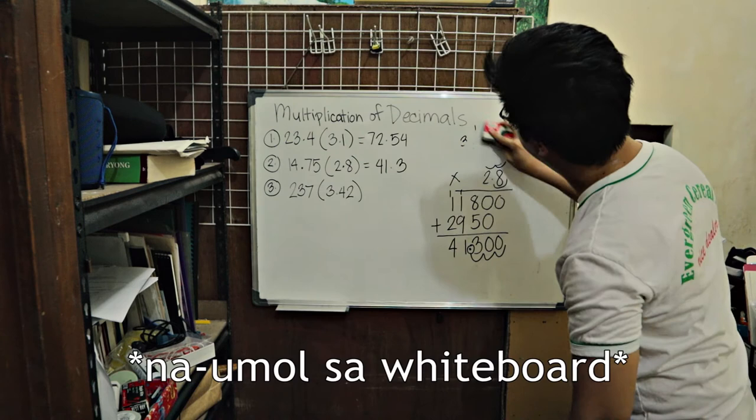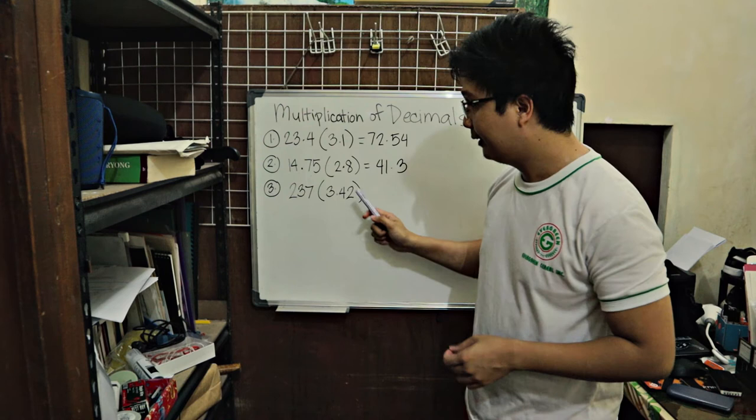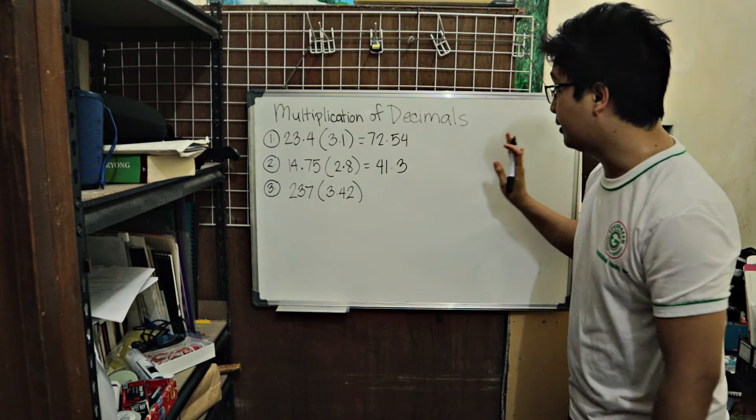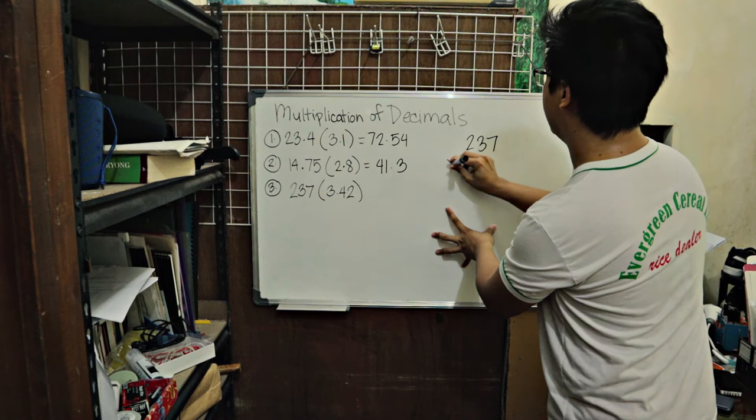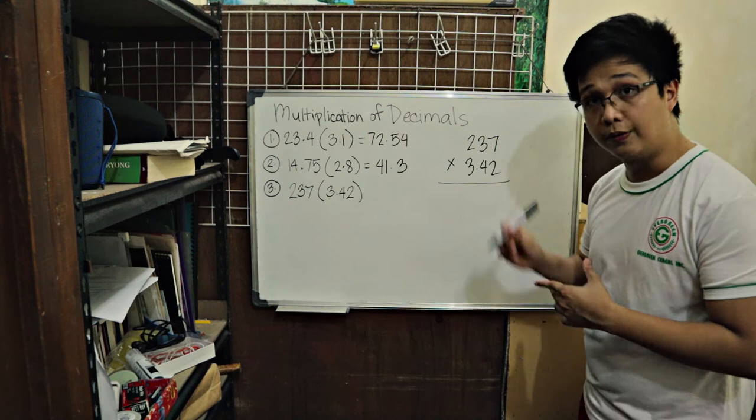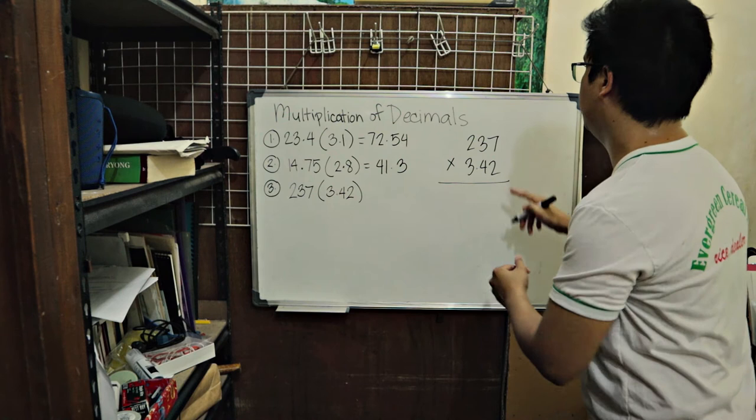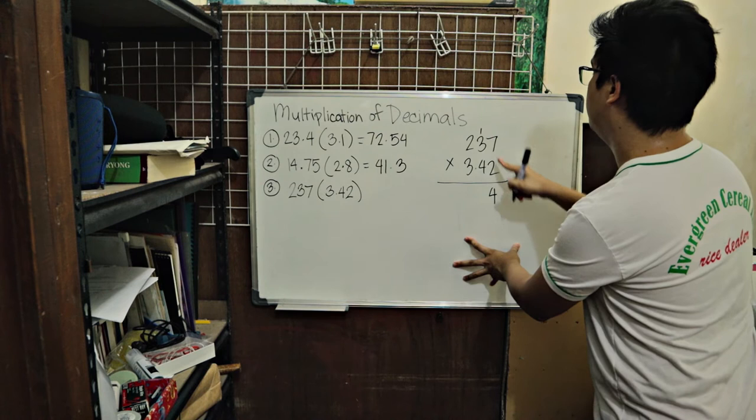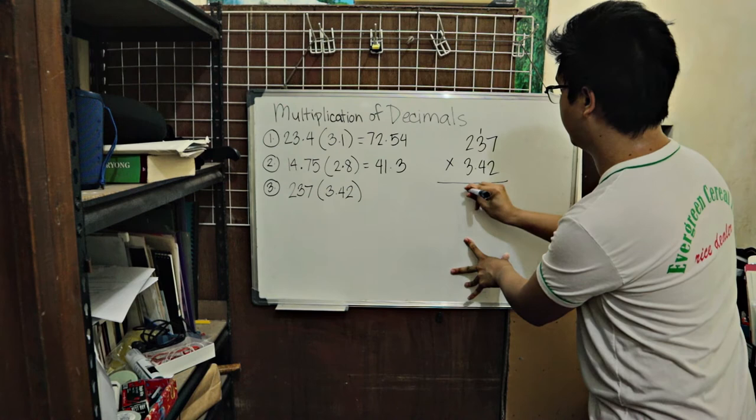What if we have a whole number 237 times a decimal number 3.42? Try that. Again, we align starting from the right. So this is 237 times 3.42. Align rightmost digits. Again, what we do is we ignore the decimal point. What we do overall next is we will just multiply as usual. So 2 times 7 is 14. 4. Carry 1. 2 times 3 is 6. Plus 1 is 7. 2 times 2 is 4. So the answer. 4, 7, 4.